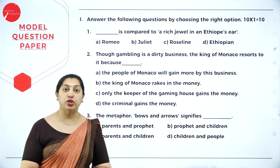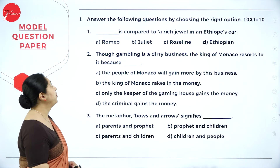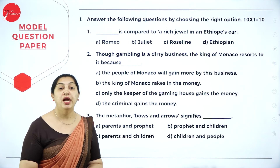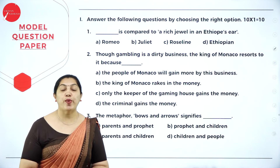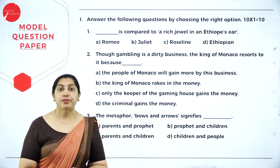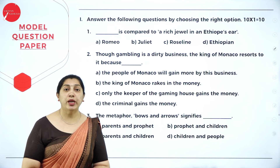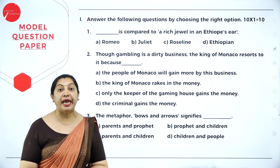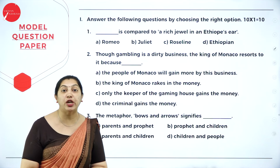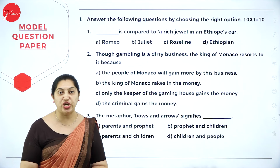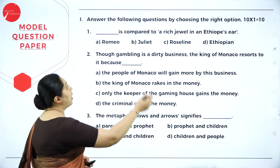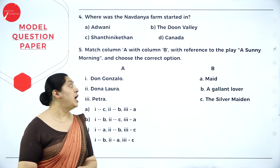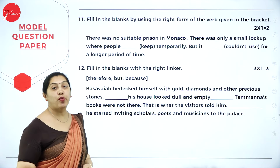Now let's move on to the question paper pattern. The first main: answer the following questions by choosing the right option. In the first main, you have 10 questions, each carrying one mark. Be thorough with all 14 chapters, as we cannot predict which chapter a one-mark question will come from. All 10 questions are mandatory — you must attend all of them.